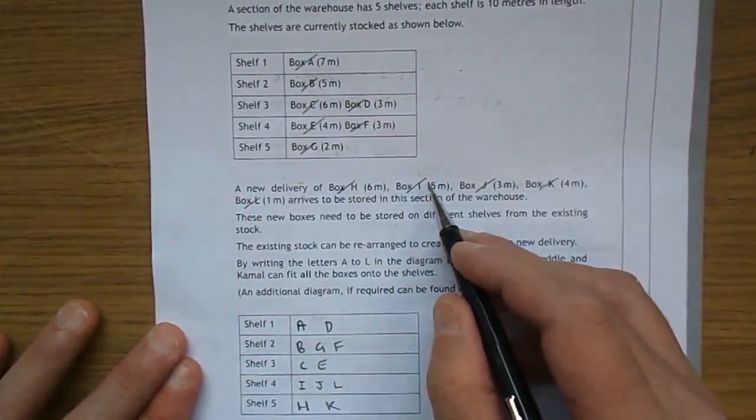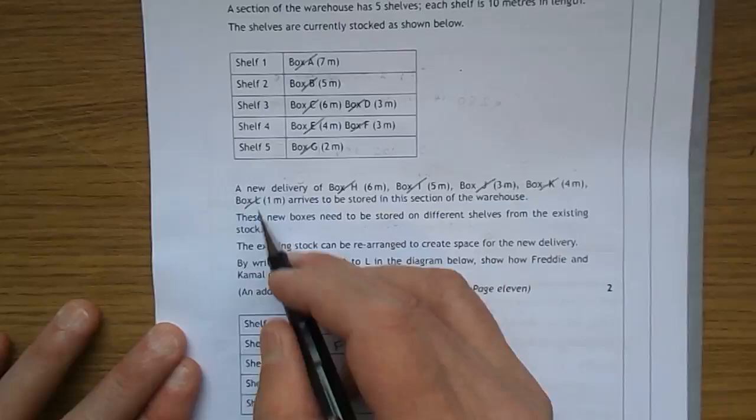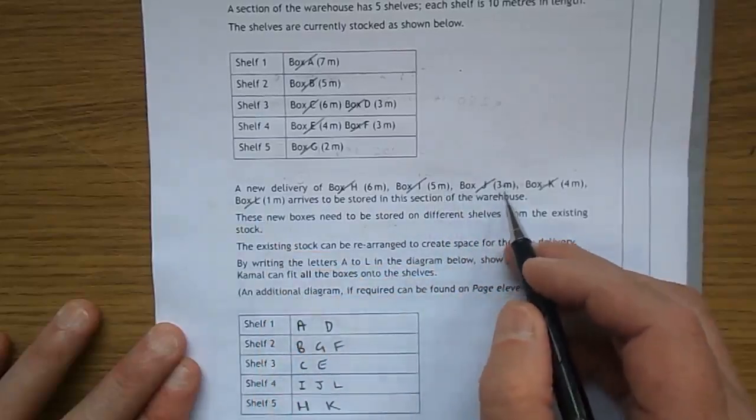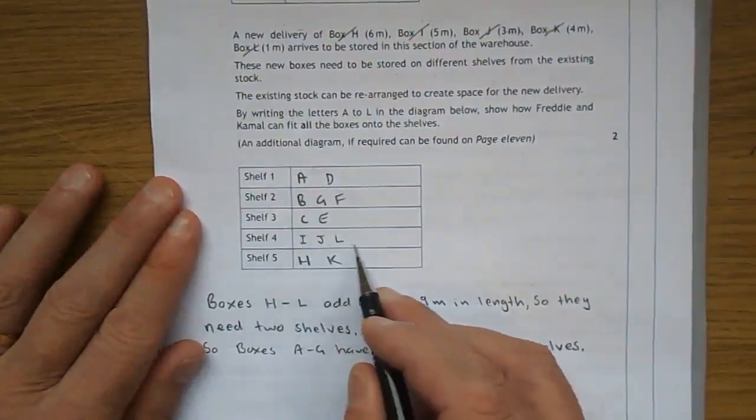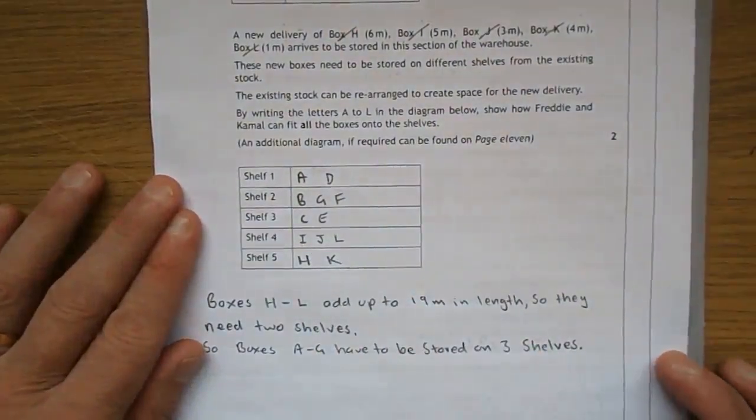The other 3, I, J, and L, 5, 6, 7, 8, 9, yep, they can all be put on their own shelf as well.